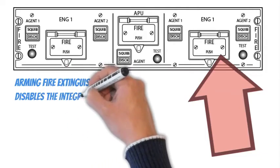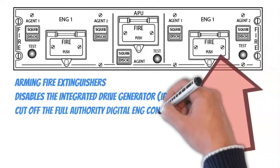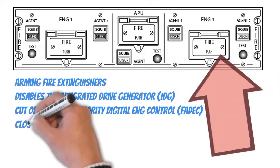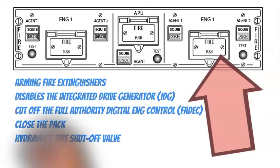We arm fire extinguishers by the fire button selection, disables the integrated drive generator (IDG), cut off the full authority digital engine control system (FADEC), and close the pack, hydraulics fire shut off valve and engine bleed.